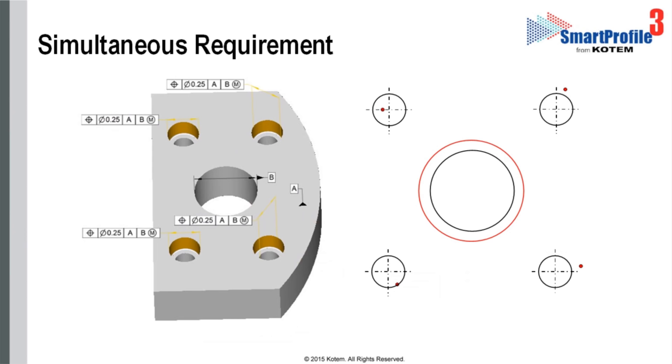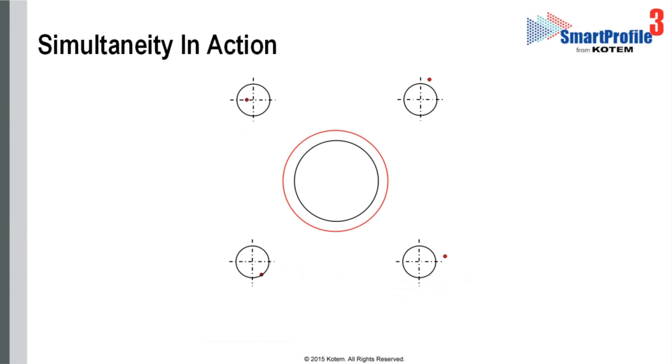The measured datum feature is represented by the red circle, and the axes of the four measured holes are represented by the four red dots located near the outlying holes. In a 3D reality, these axes could be tilted with respect to datum A.